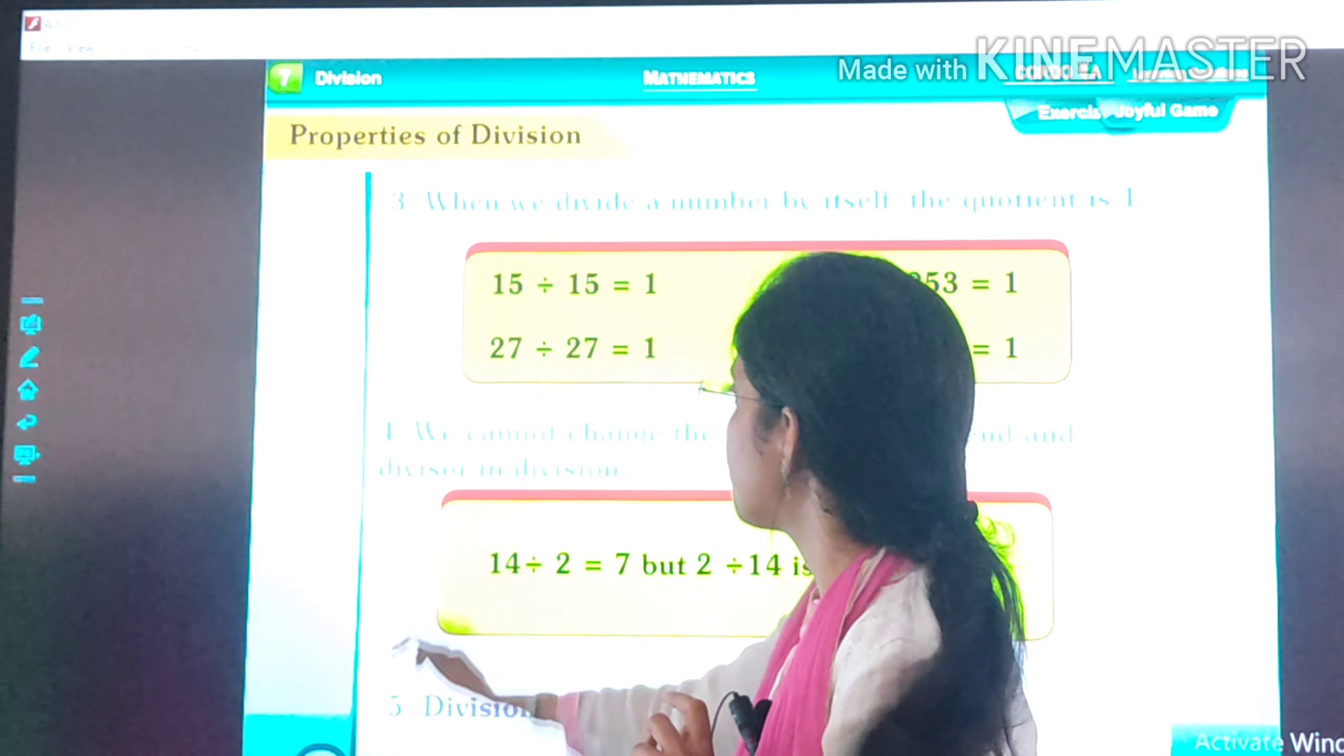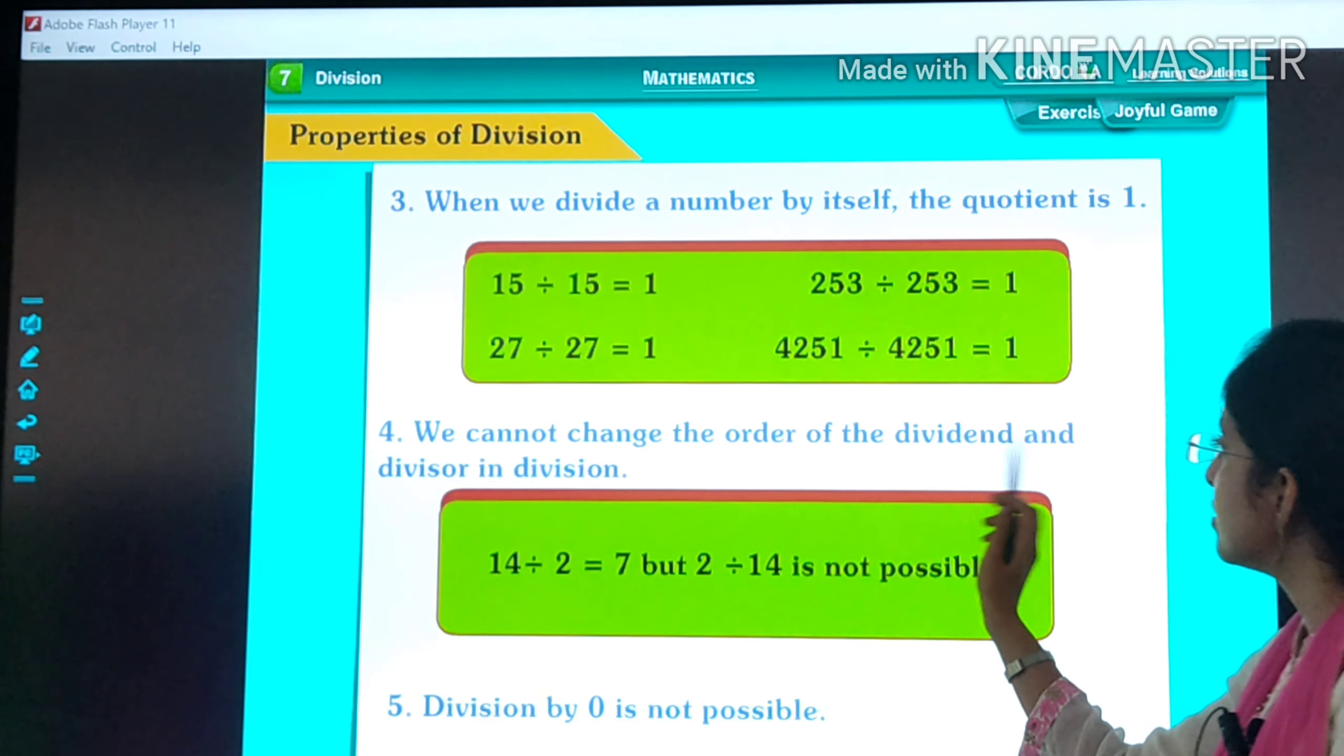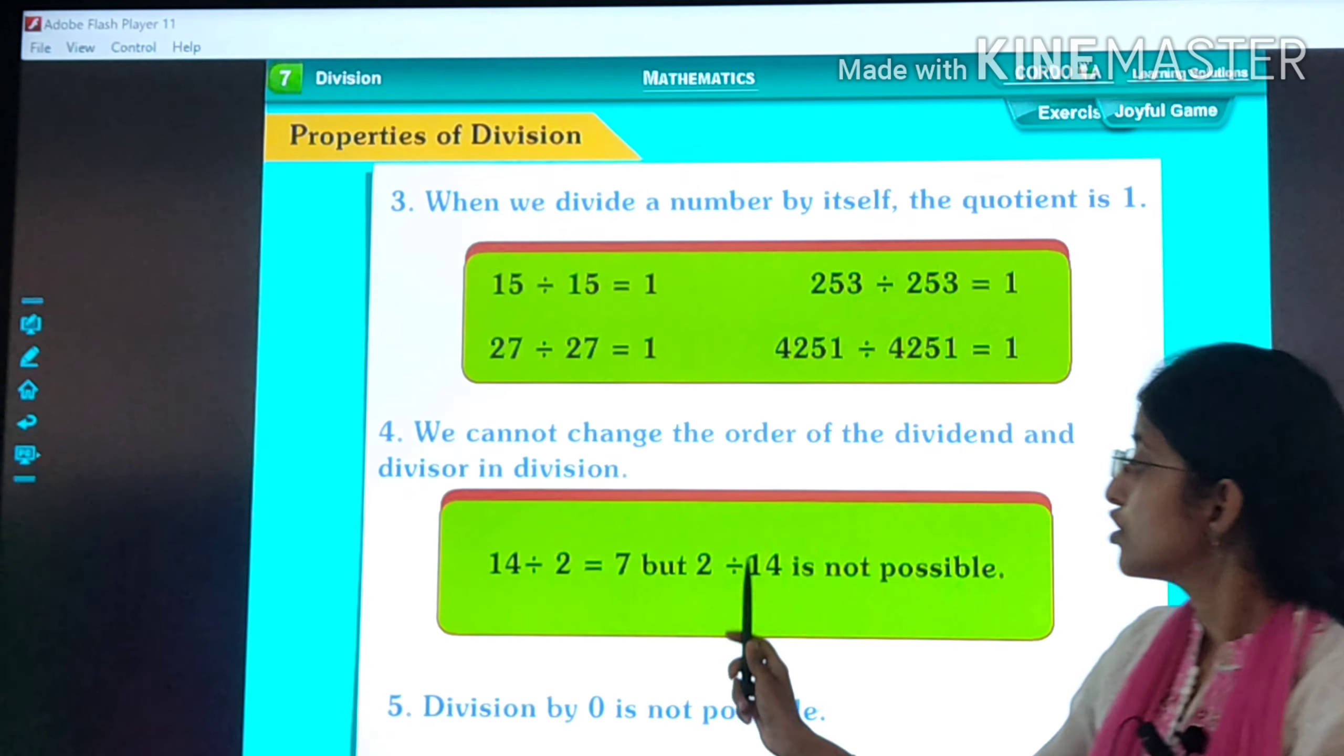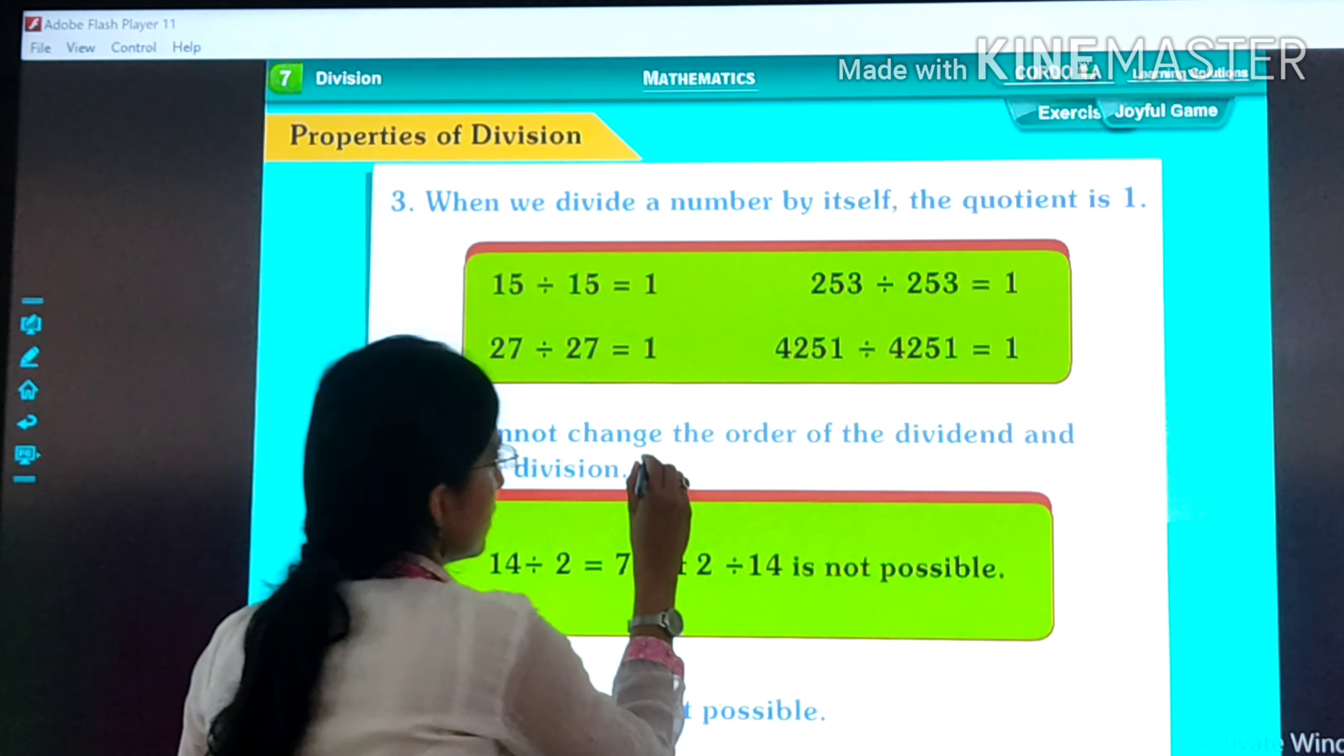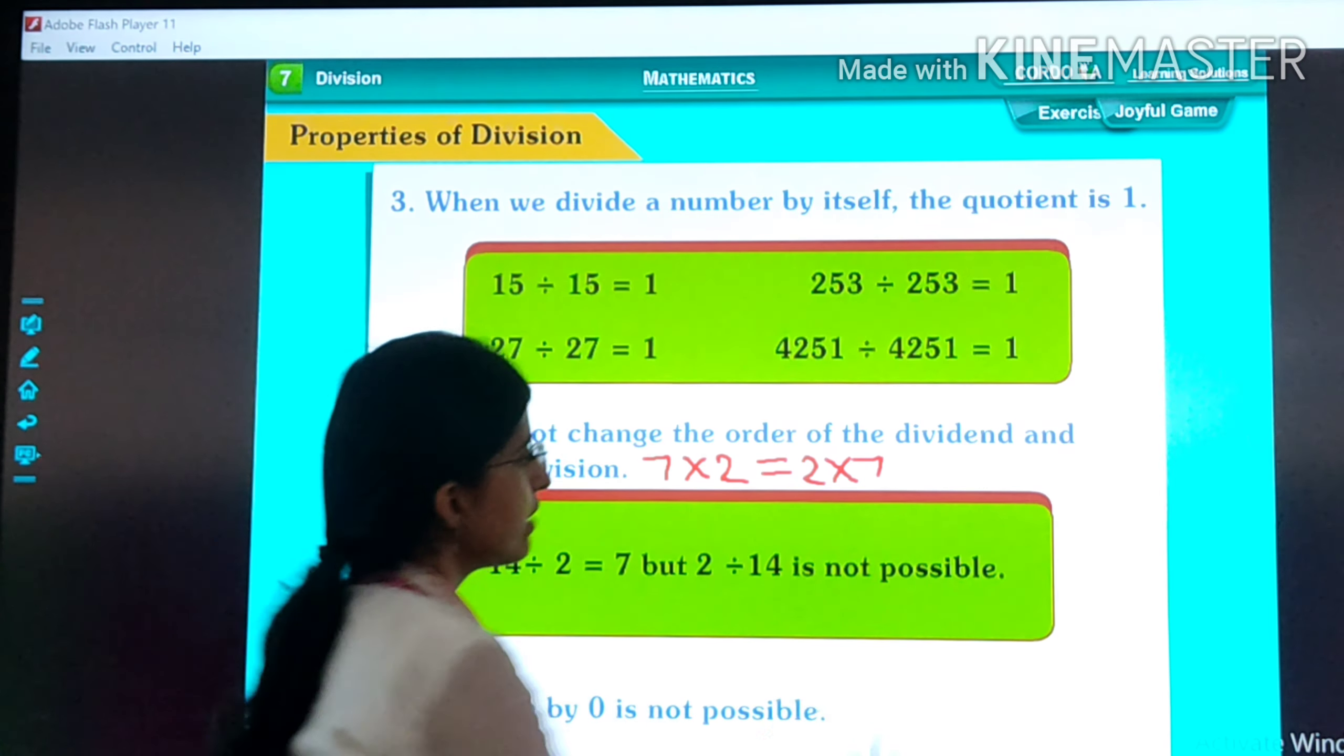Now children, the fourth property is very very important. Listen carefully. We cannot change the order of the dividend and divisor in division. 14 divided by 2 is equal to 7, but 2 divided by 14 is not possible. See, what was the case in multiplication? In multiplication we can change the order. 7 times 2 is equal to 2 times 7, which is equal to 14.